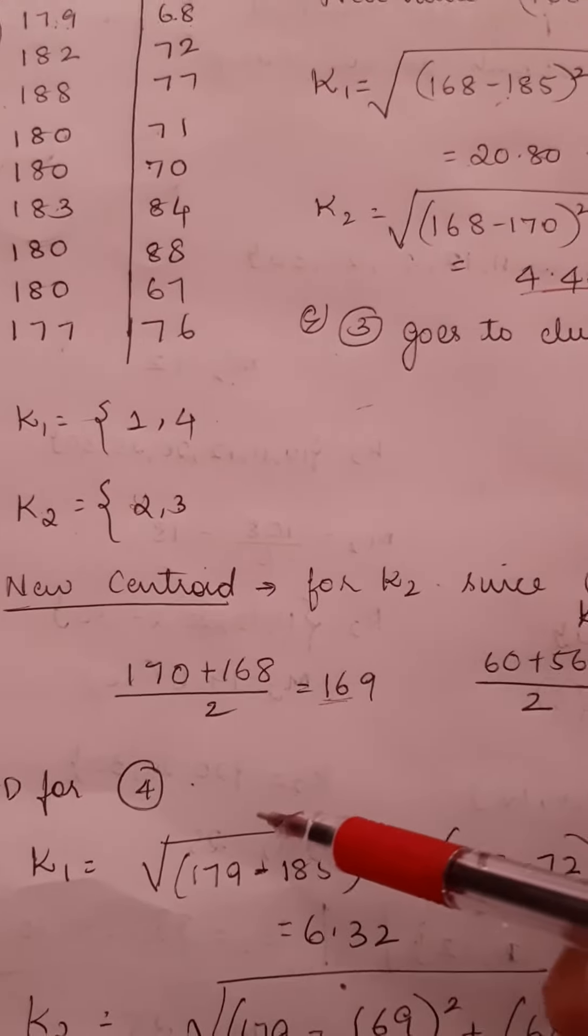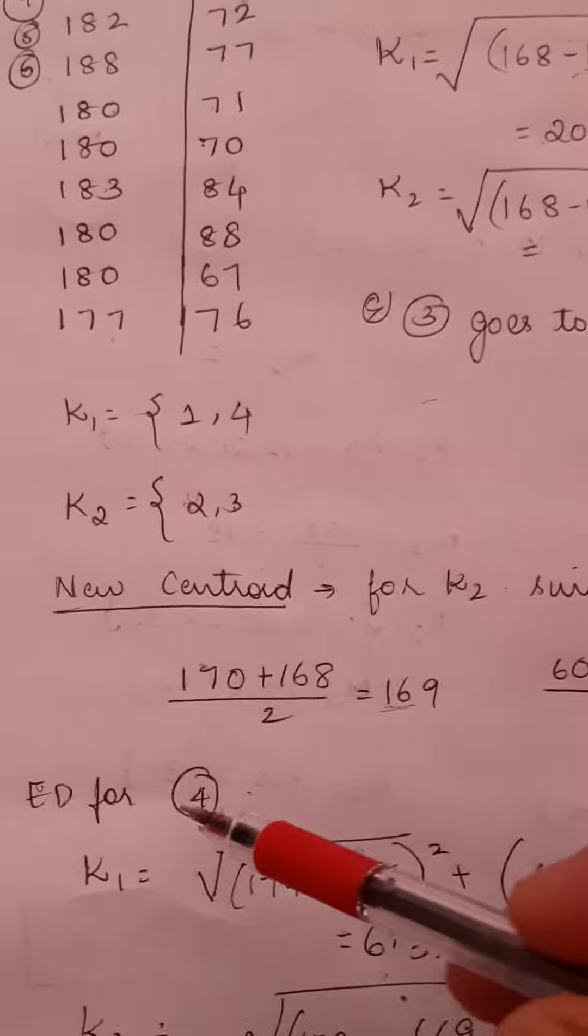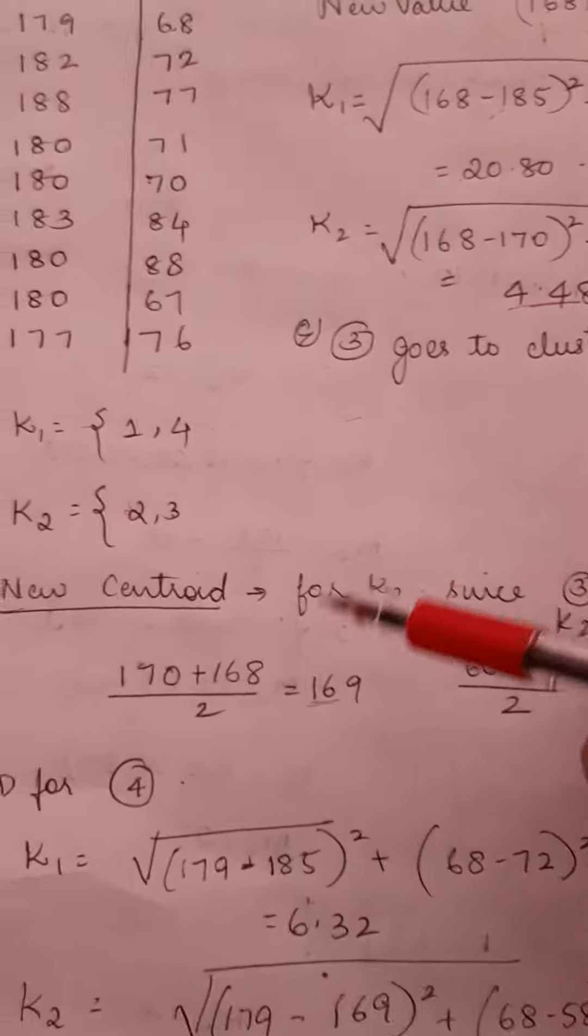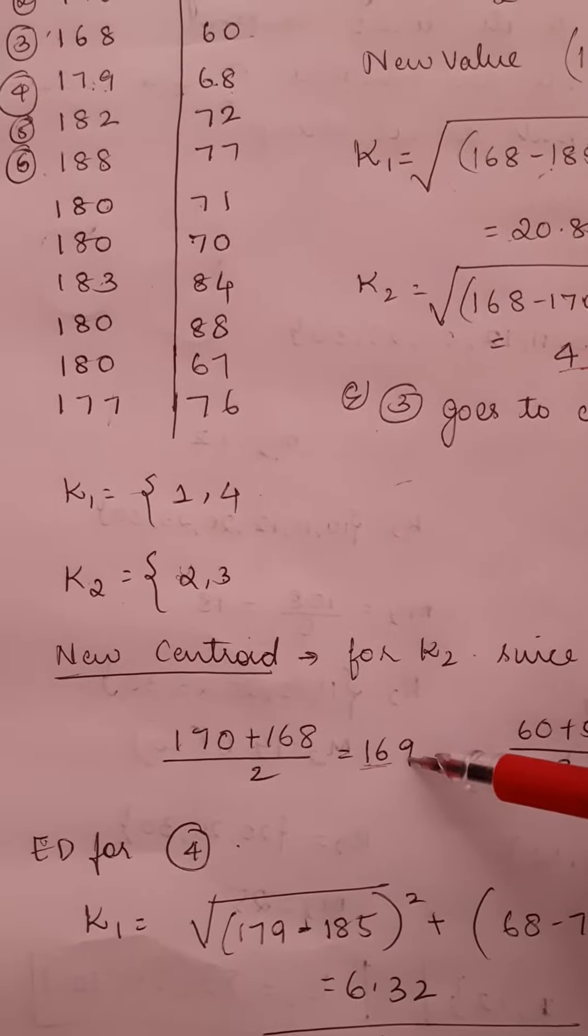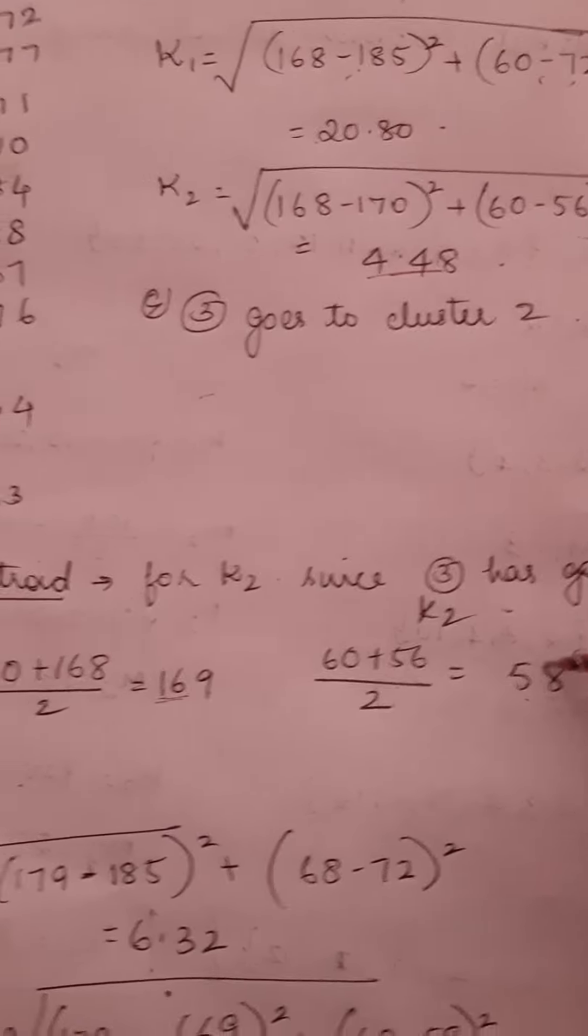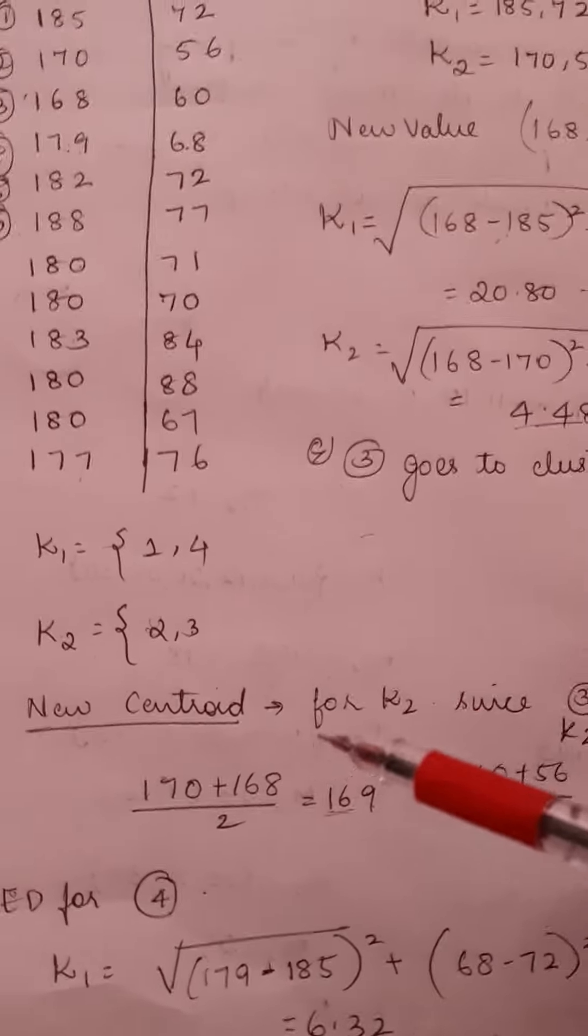Okay, now as I told you earlier, for record 4 that is 179 and 68, we have computed the new centroid value 169 and 58. Now I am going to find the distance for the fourth record.